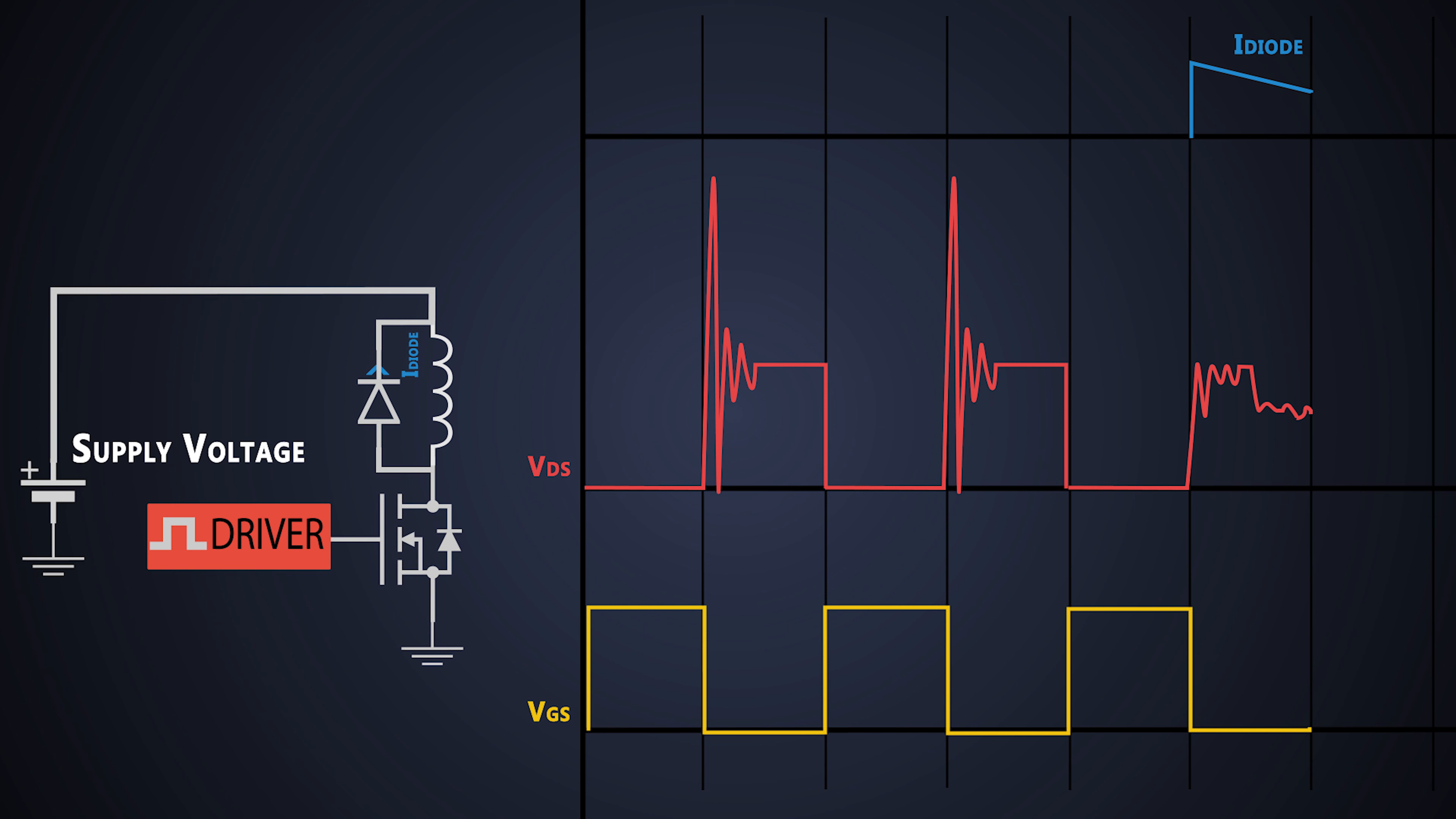This diode has many names such as flyback diode, anti-pilot diode, reverse bias diode or freewheeling diode. Because this diode is acting like a freewheel which goes with the flow of this current.